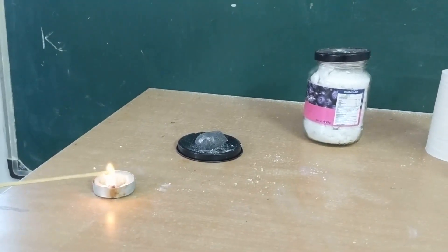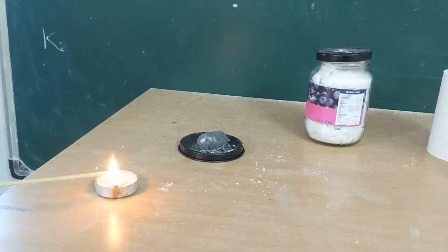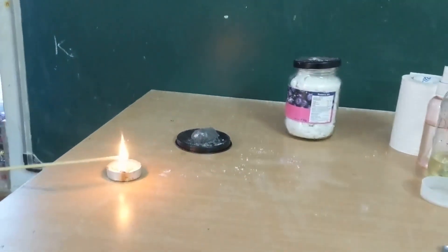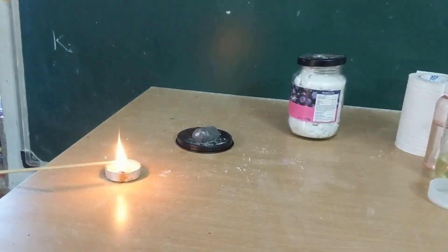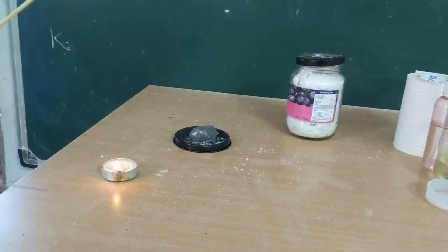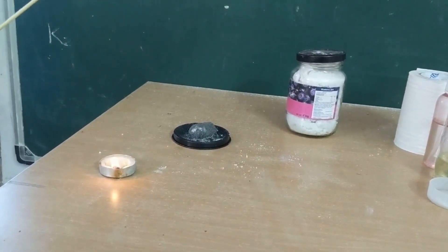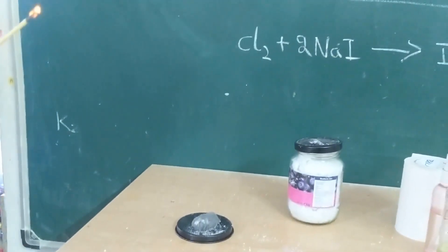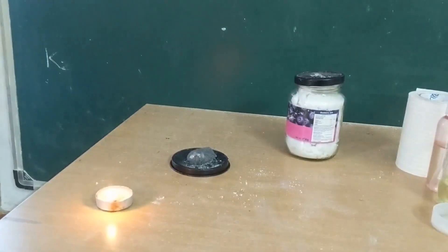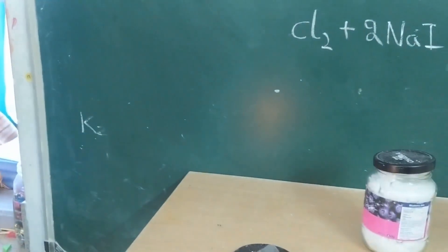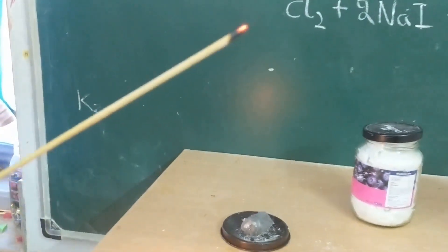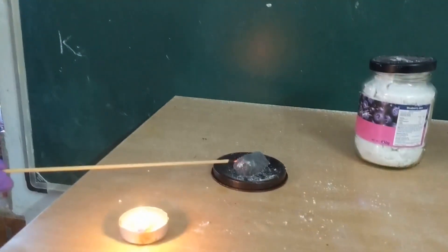I am lighting the wooden splint with a candle. Now it is glowing orange. Place it inside the mixture.